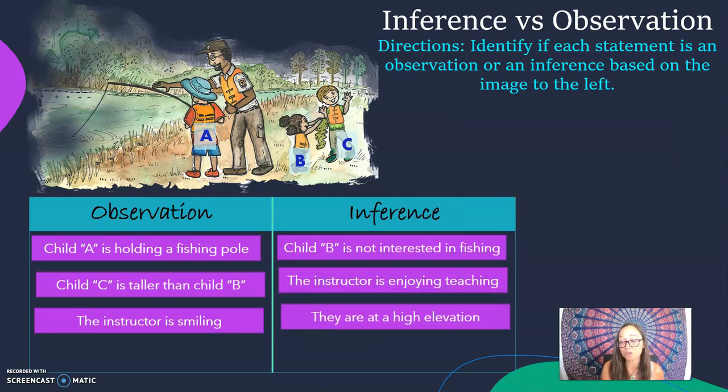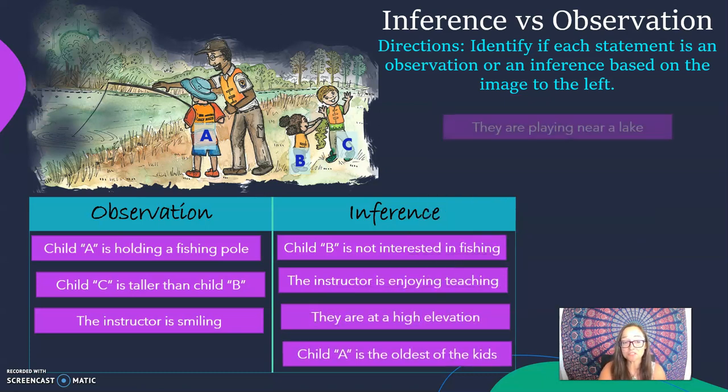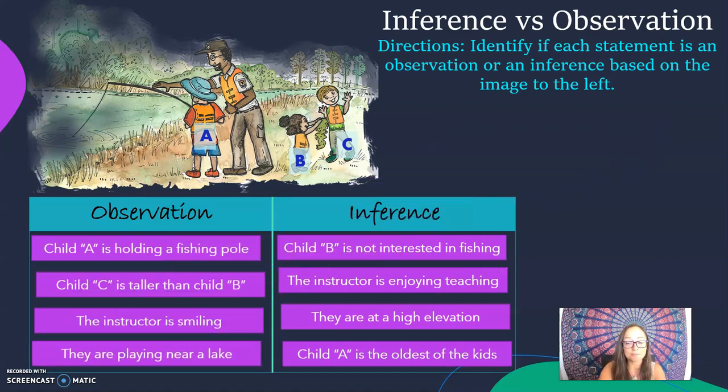We would have to rely on some kind of measurements. So at this point just looking at the picture it'd be an inference. But like I have my Apple watch that actually has an option where I can measure my altitude. So if I was actually there, then that would be an observation if I had the data that I collected. Child A is the oldest of the kids. That's an inference based on height, but you don't really know, it could just maybe have gone through a growth spurt. And then they are playing near a lake. True, we could see that, that is an observation.